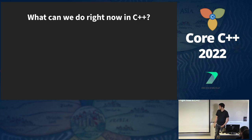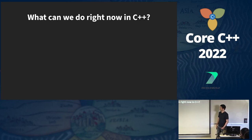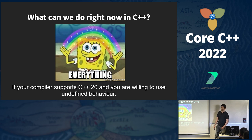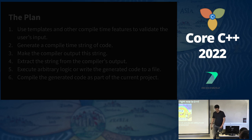So we've seen a proposal, a compiler with language extensions, and features from other languages. You may ask: what can we do right now in C++? The answer is everything, if your compiler supports C++20 and you are willing to use undefined behavior — more on that later.